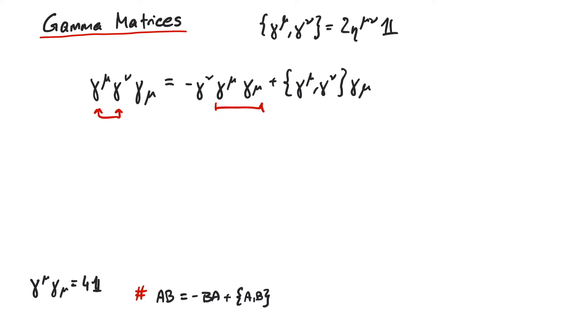Now here we know this is 4 times the identity matrix, so this yields minus 4 times gamma nu.